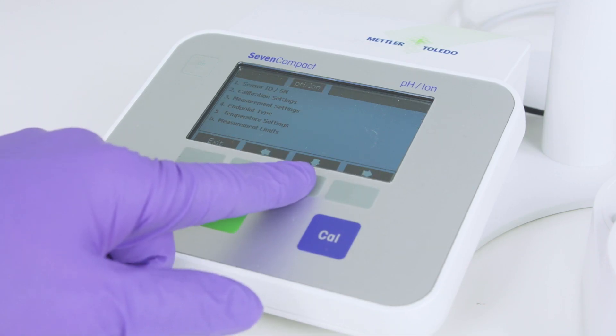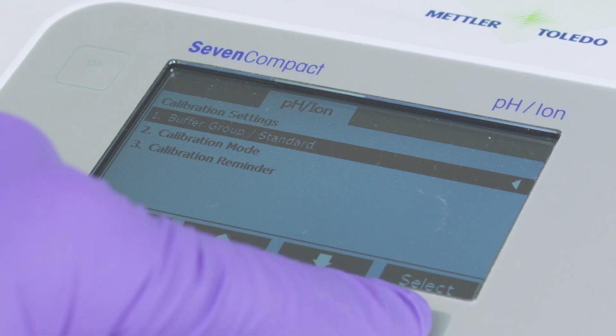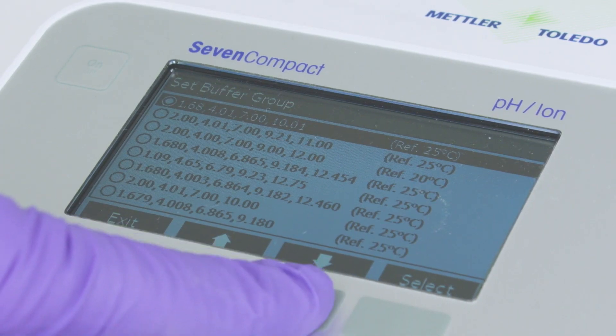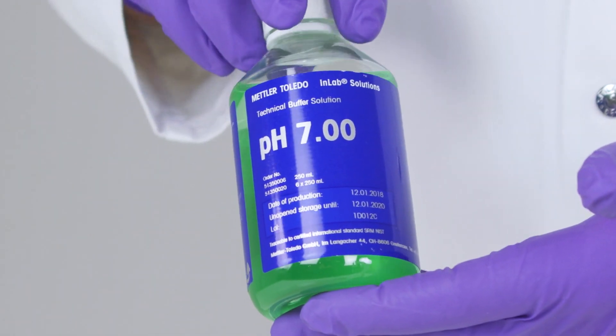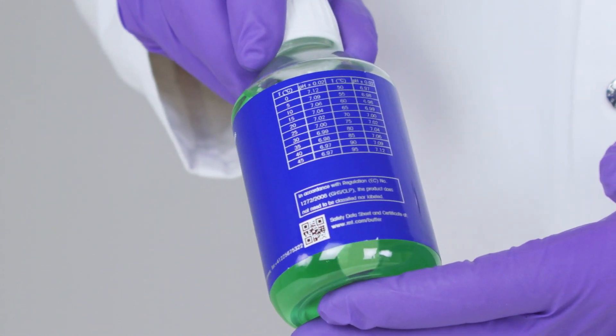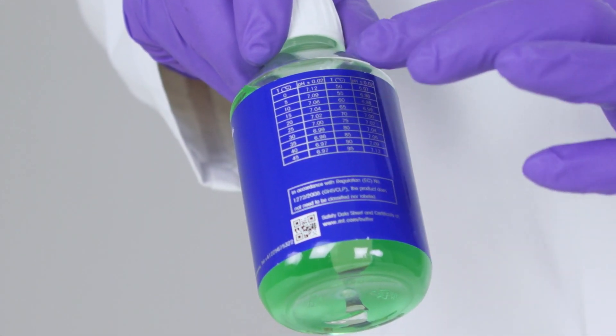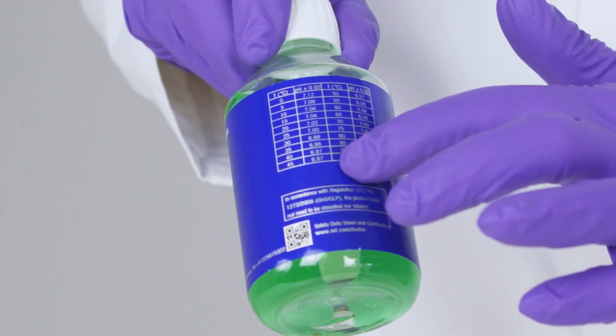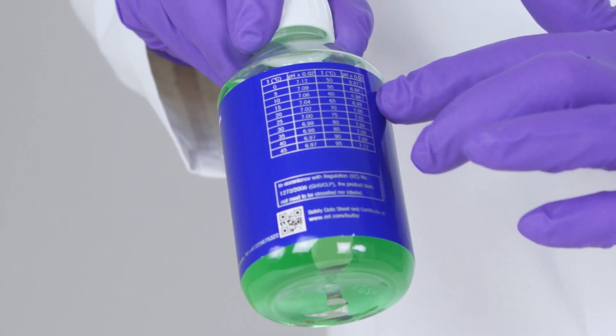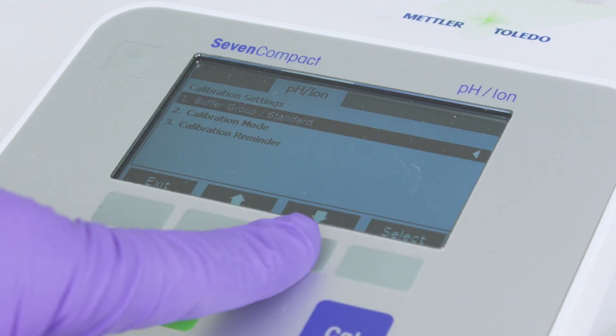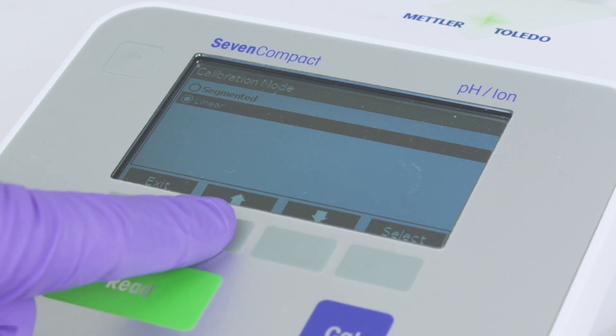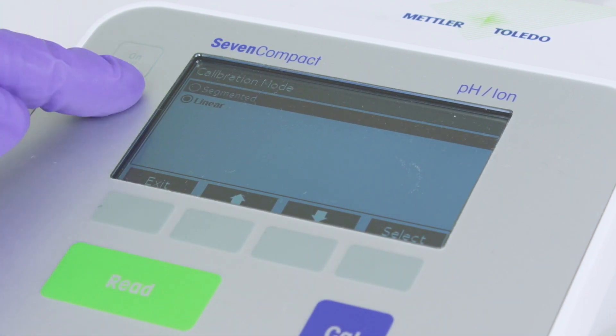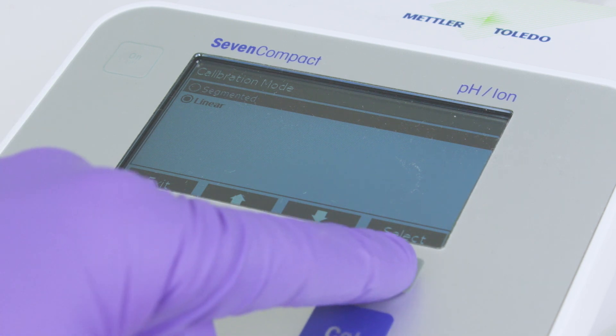You can set the buffers you wish to use by choosing calibration settings, then buffer group, then choosing from the list of standard buffers. It's really important you make sure the buffers you select include the ones you're actually using, or you'll get inaccurate results. By selecting the right buffer group, you're telling the meter to account for the temperature dependency of the buffers in use. Next, you can select from two calibration modes. Linear calibration is the more common mode, whereas segmented mode is best suited for wide pH ranges, including very high and low pH values.